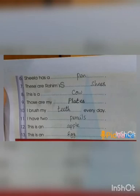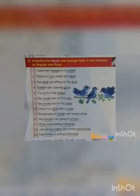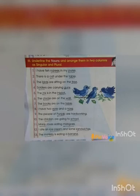Take page number 27. The remaining part of exercise number 2. Sixth one — Sela has a pen. These are Rahim's shoes. This is a cow. Those are my plates. I brush my teeth everyday. I have two pencils. This is an apple. Children, in page number 27, the third exercise is: Underline the nouns and arrange them in two columns as singular and plural.